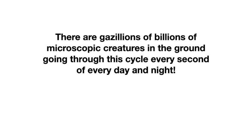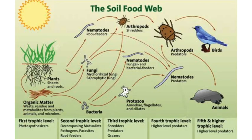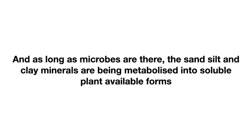There are billions of microscopic creatures in the ground going through this cycle every second of every night. In the soil food web, bacteria and fungi are the most abundant, and they can be beneficial as well as disease-causing microorganisms. However, in a well-balanced soil food web, through consumption, inhibition, and competition, the bad guys are always kept under control. So as long as microbes are there in the soil, the sand, silt, and clay minerals will be metabolized into soluble plant-available forms.